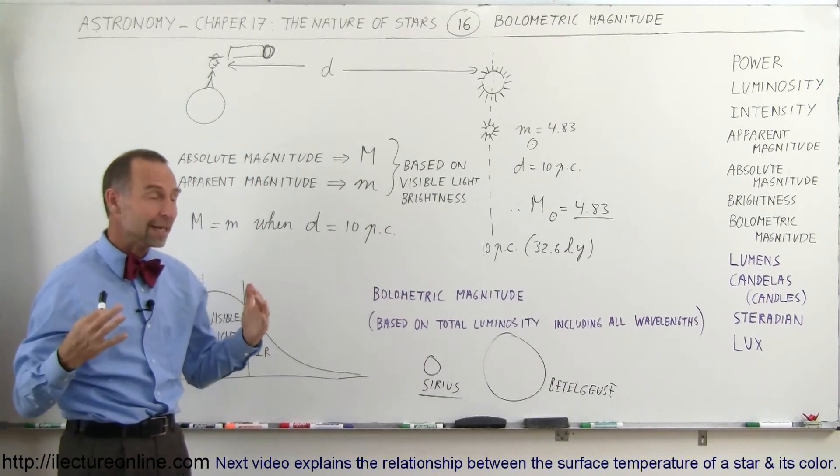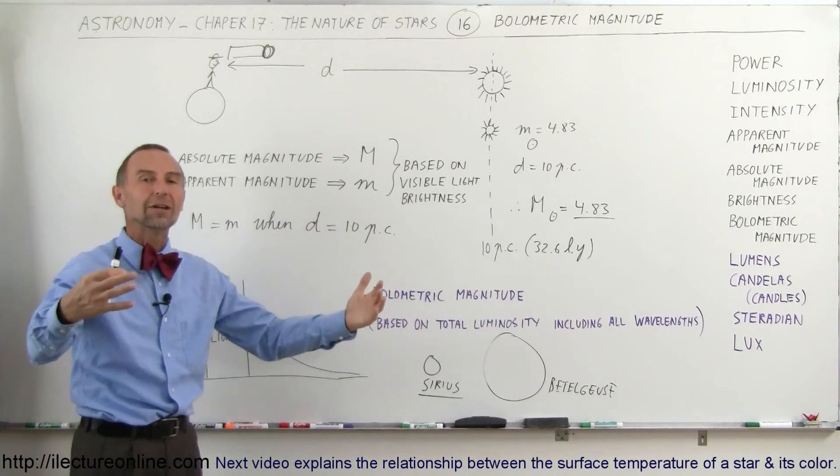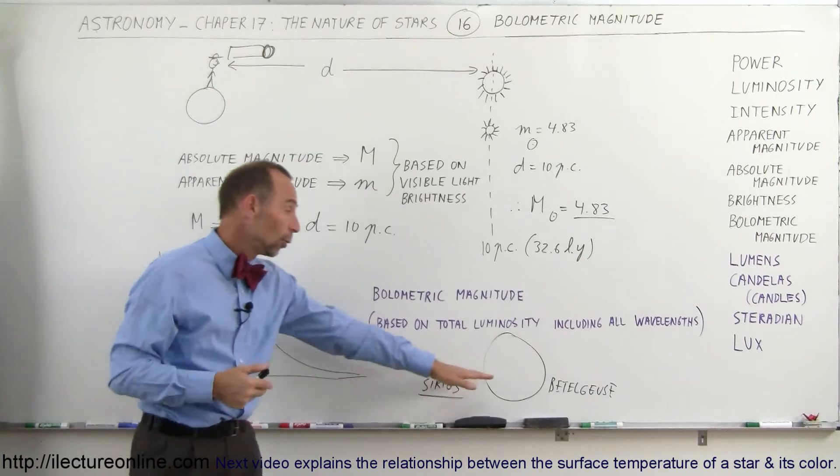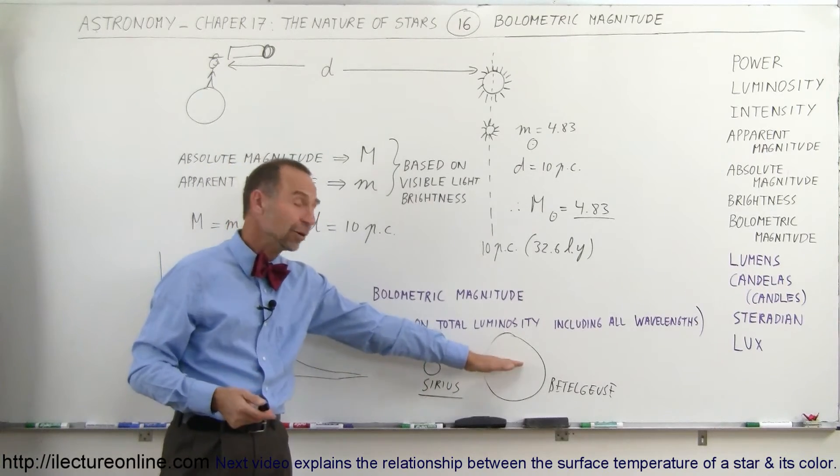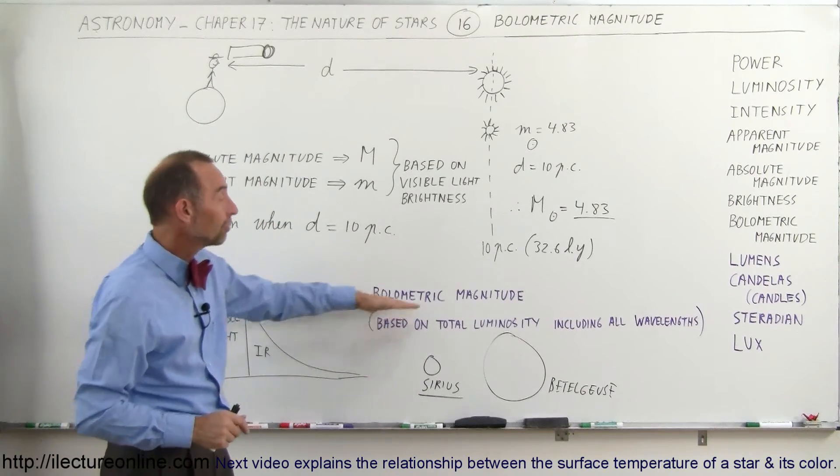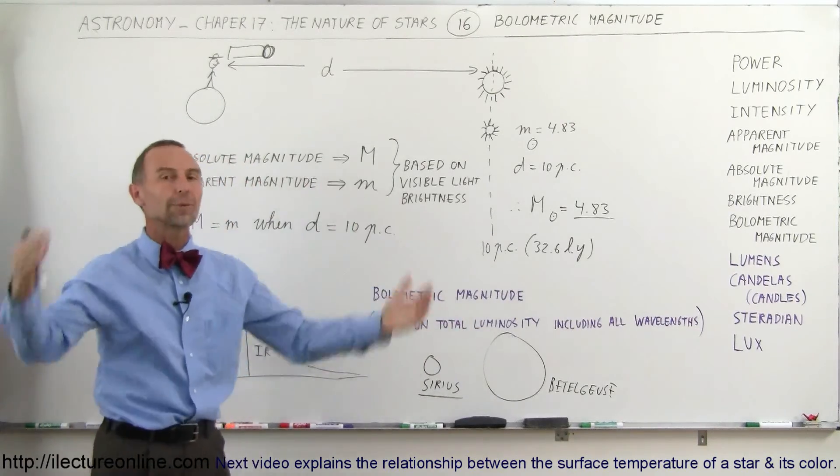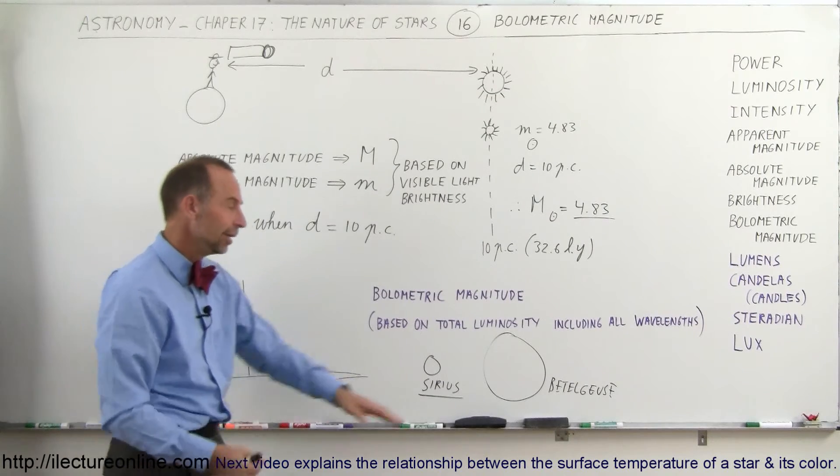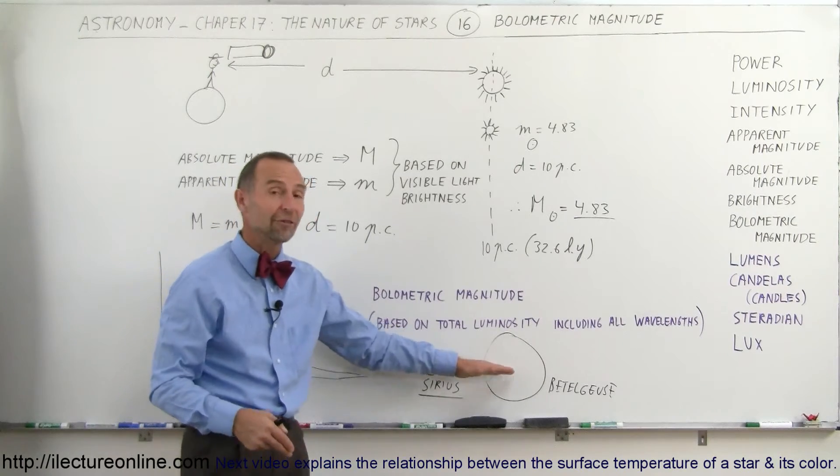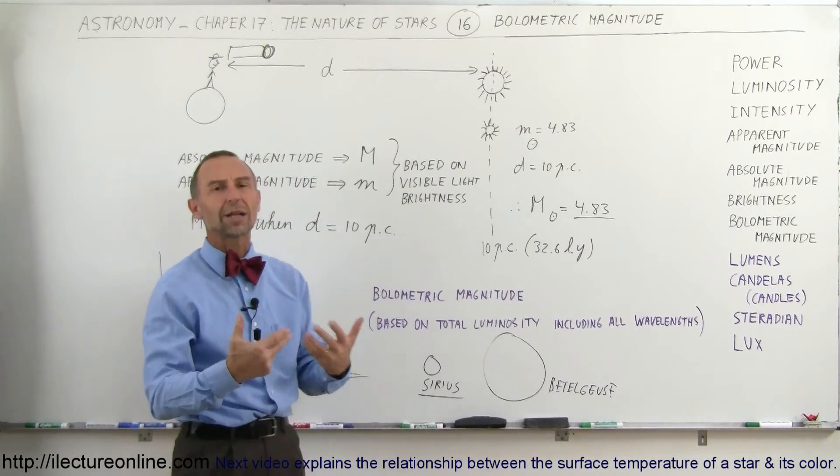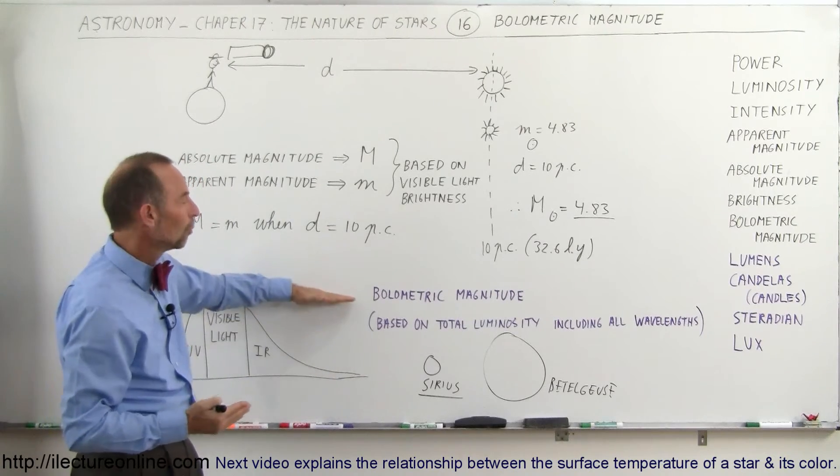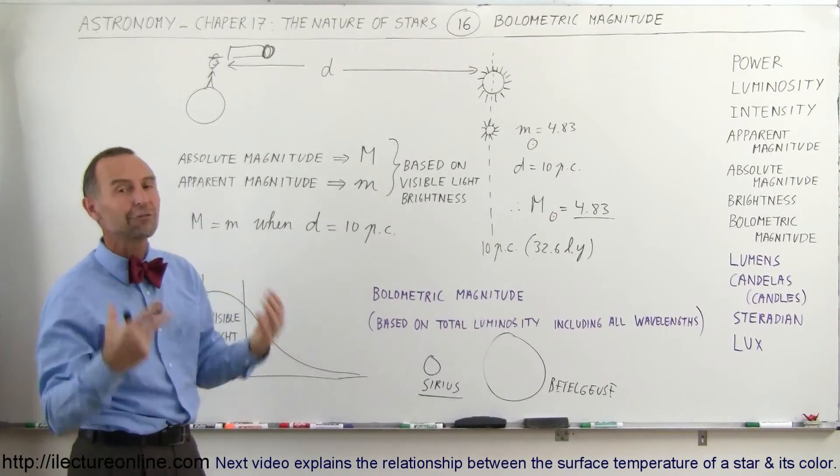Nevertheless, since it's so big, it puts out way more energy than Sirius does. Yet the apparent magnitude of Betelgeuse is less than the apparent magnitude of Sirius. But if we were to look at the bolometric magnitude, meaning taking all of the radiation into account, including the enormous amount of infrared radiation that Betelgeuse puts out, then Betelgeuse would have a much brighter apparent magnitude than Sirius.